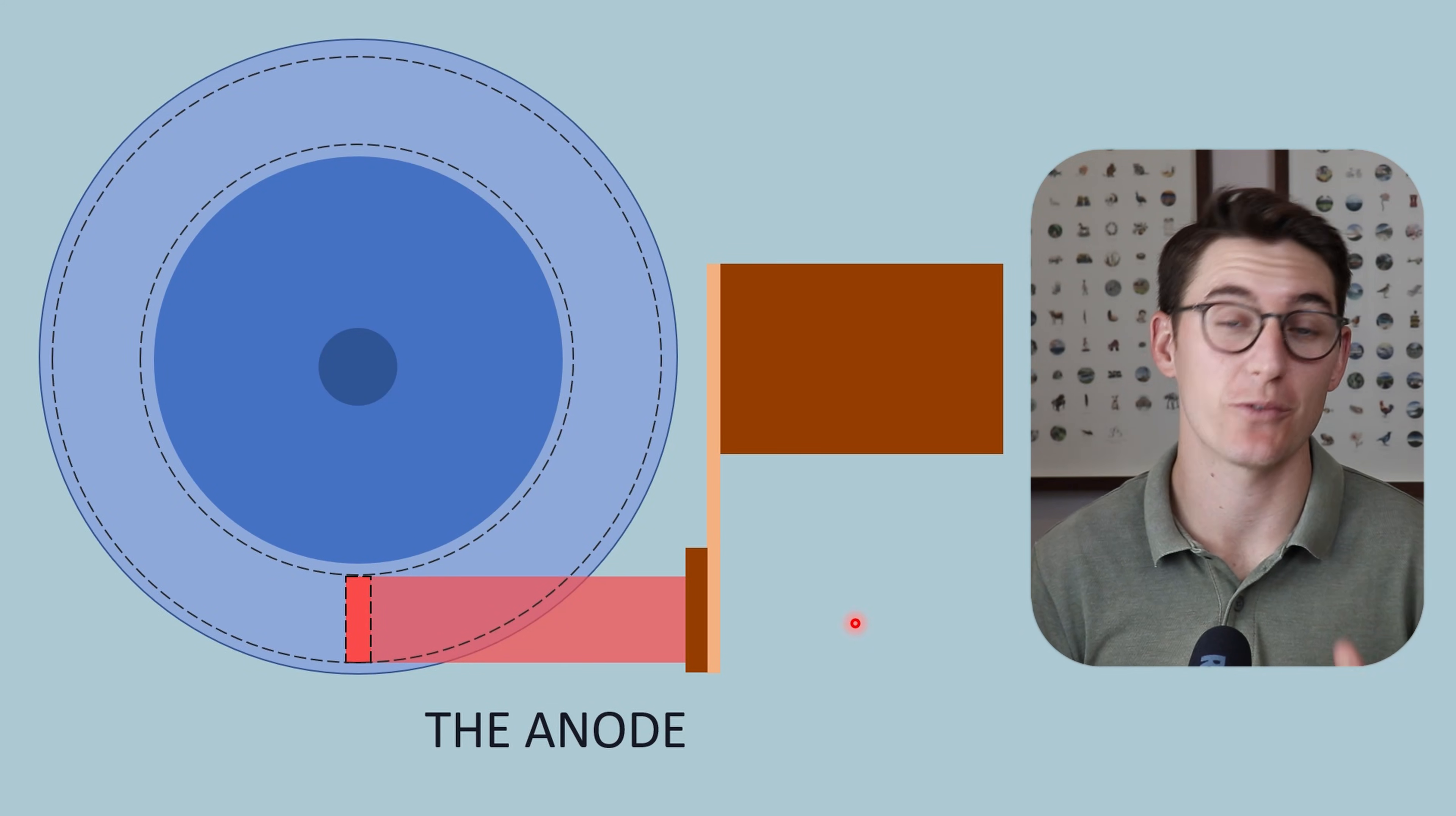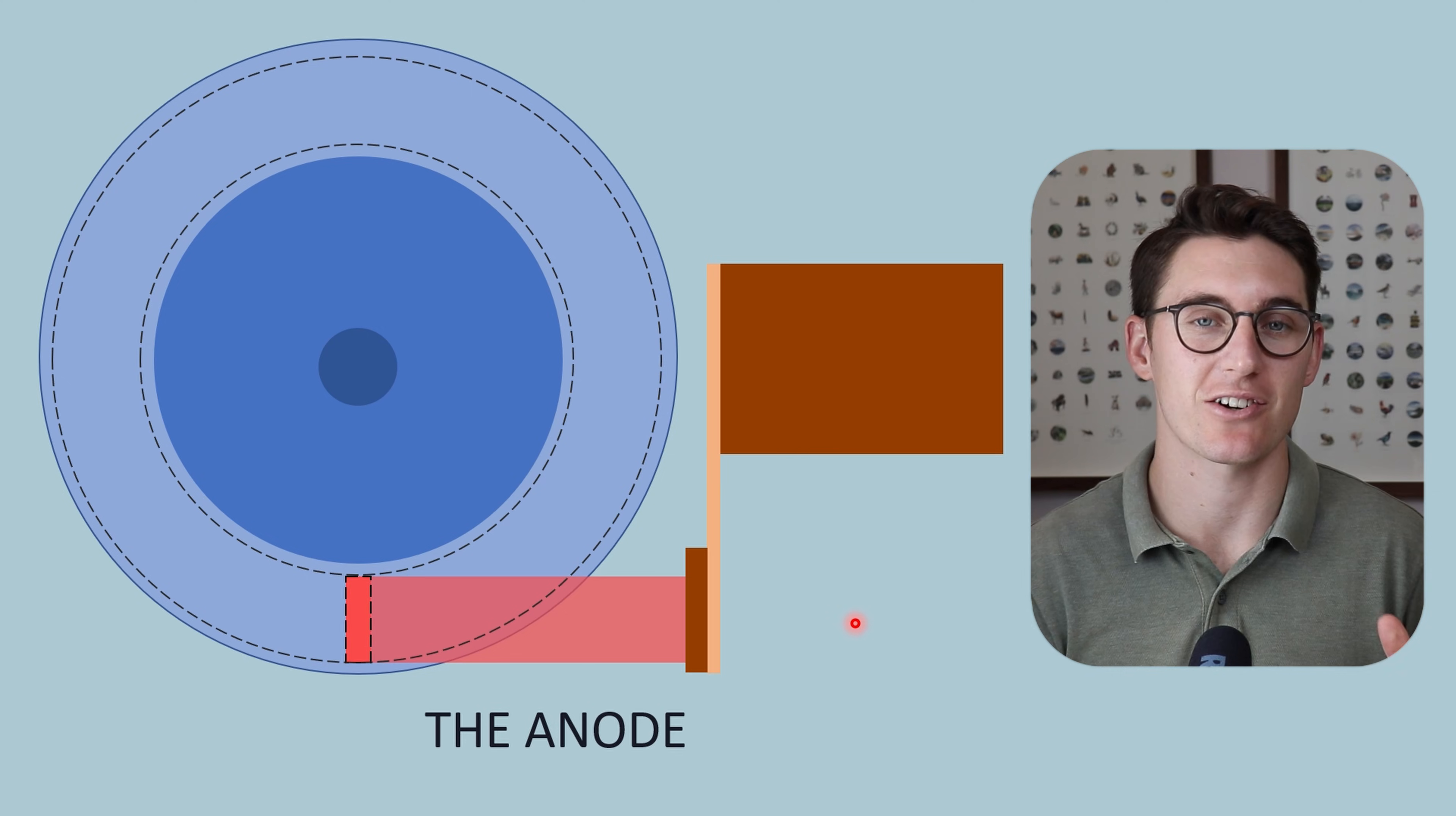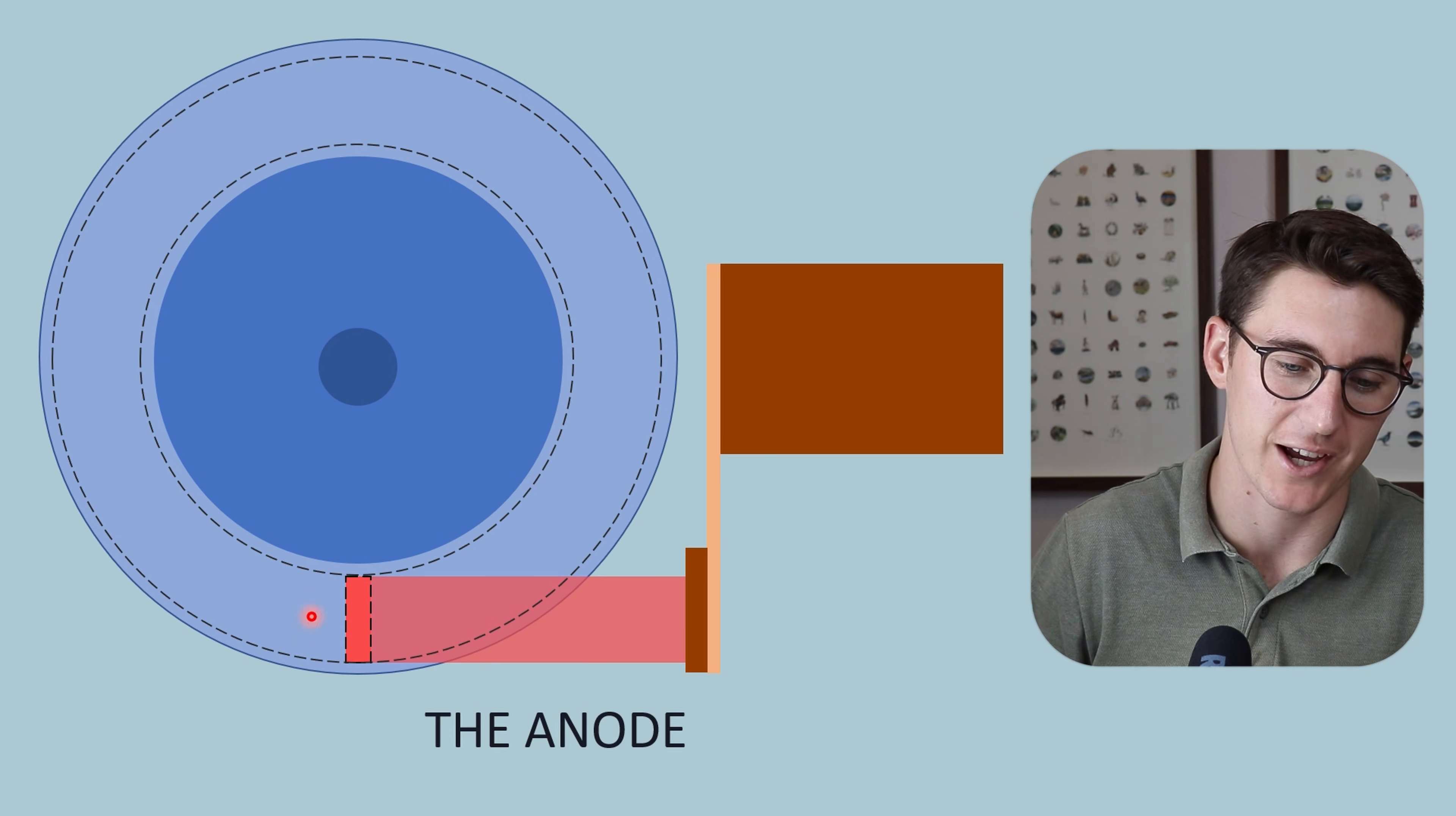Now that we've looked at the cathode and reviewed thermionic emission, we have electrons available at the tungsten filament surface ready for acceleration towards our anode. Let's now shift our attention towards the anode. If you look at this diagram I've drawn, the cathode here is side on, we've got our electrons being accelerated towards our anode.